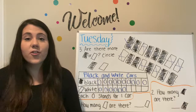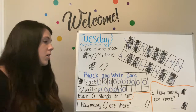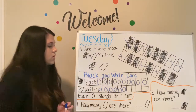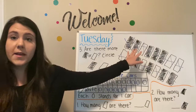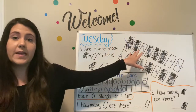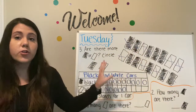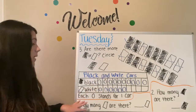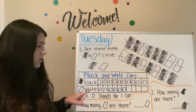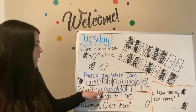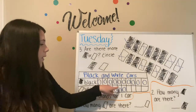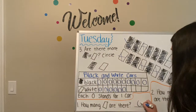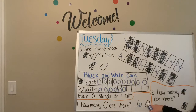Now we're going to answer the questions below our picture. Number one: how many white cars are there? We're not looking at the original picture anymore — we already got all the data we needed. Now we're focusing on our picture graph. So let's count the white cars together: one, two, three, four, five, six. There are six white cars.